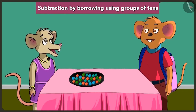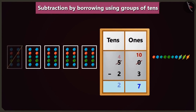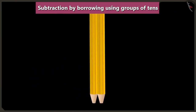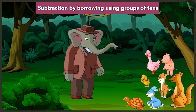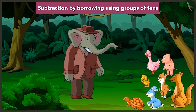Oh yes, you are right Chuchu. So here if we subtract 1 ten from 5 tens it becomes 4 tens, and subtracting 2 tens from 4 tens leaves 2 tens. So 50 minus 23 equals 27 jellies. In subtraction, whenever we borrow a ten from a digit, we have to reduce that digit by one ten. Children, today we have learnt some interesting facts related to subtraction of two-digit numbers with borrowing.